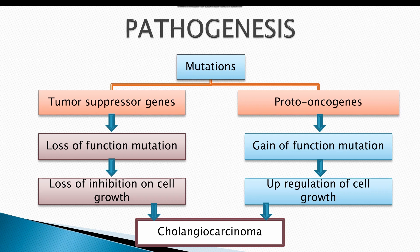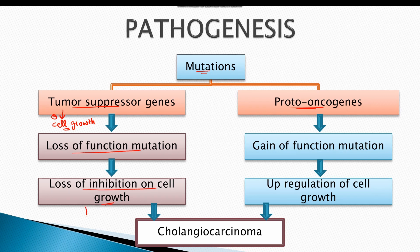Like all carcinomas, cholangiocarcinoma is driven by mutations in tumor suppressor genes and proto-oncogenes. Tumor suppressor genes inhibit excessive cell growth, acting as a check against unnecessary cell division. In cholangiocarcinoma there is a loss of function mutation, meaning these genes fail to perform their normal function, resulting in loss of inhibition on cell growth and therefore excessive cell proliferation.